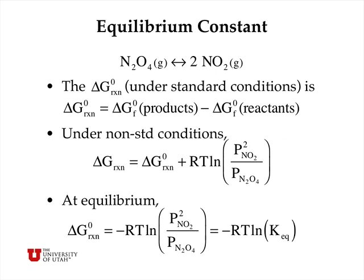So let's talk about the equilibrium constant. Suppose we have this N2O4 equilibrium with two NO2 molecules. The ΔG for reaction under standard conditions, one bar pressure of both N2O4 and NO2, is defined to be the difference between the ΔG of formation of the products and the ΔG of formation of the reactants, same thing that we've done for enthalpy and entropy.